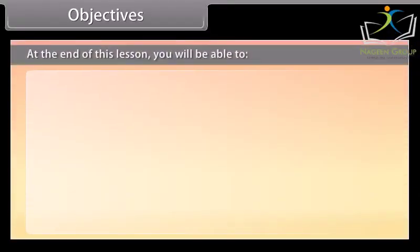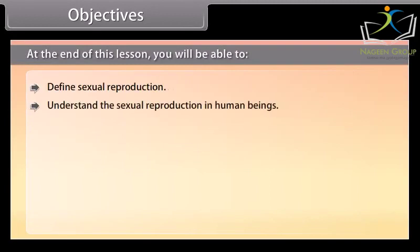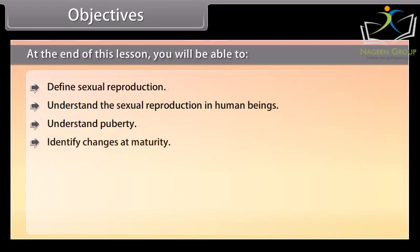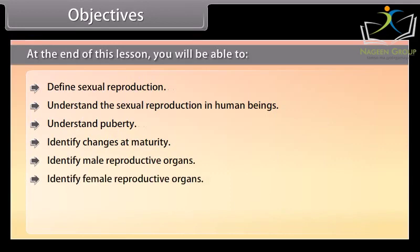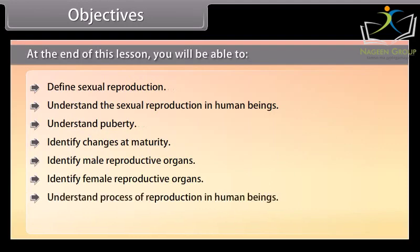At the end of this lesson you will be able to: define sexual reproduction, understand sexual reproduction in human beings, understand puberty, identify changes at maturity, identify male and female reproductive organs, understand the process of reproduction in human beings, and understand menstruation.